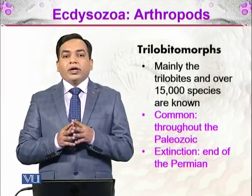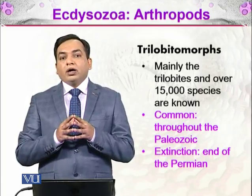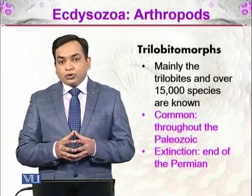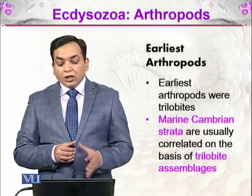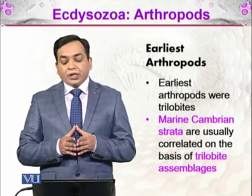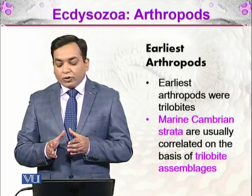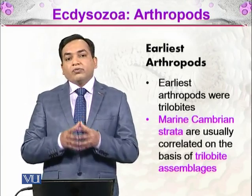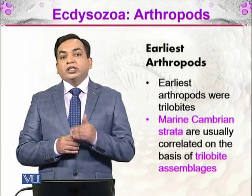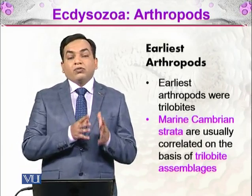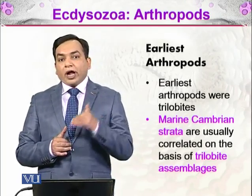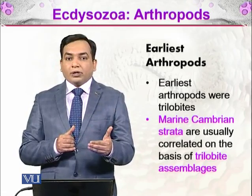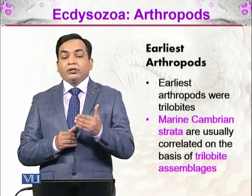Trilobites are well-preserved fossils of arthropod ancestors that we can reference today. The earliest arthropods were trilobites. Marine Cambrian strata are usually correlated on the basis of trilobite assemblages — meaning the Cambrian fossils we see today contain trilobites, and based on their presence we can identify fossils as being from the Cambrian period, when trilobites existed.